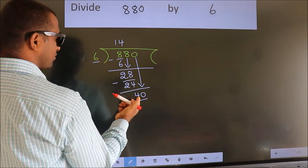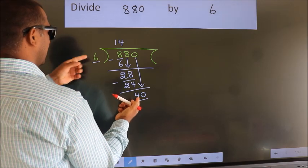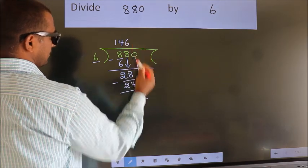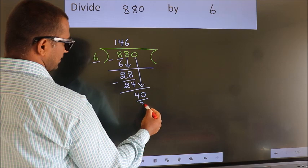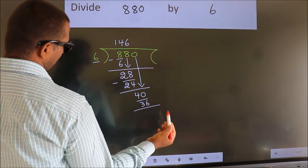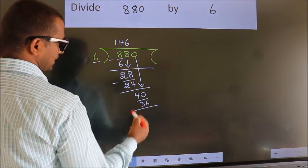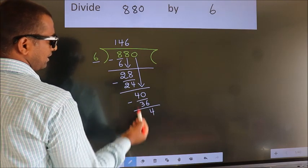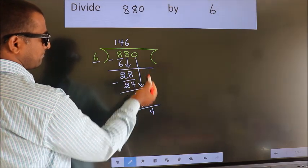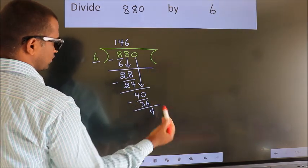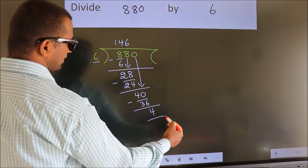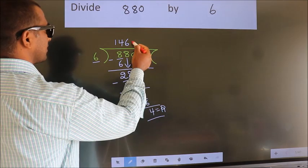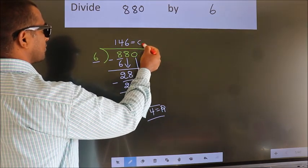A number close to 40 in the 6 times table is 6 × 6 = 36. Now we subtract. We get 4. No more numbers to bring down, so we stop here. This is our remainder. This is our quotient.